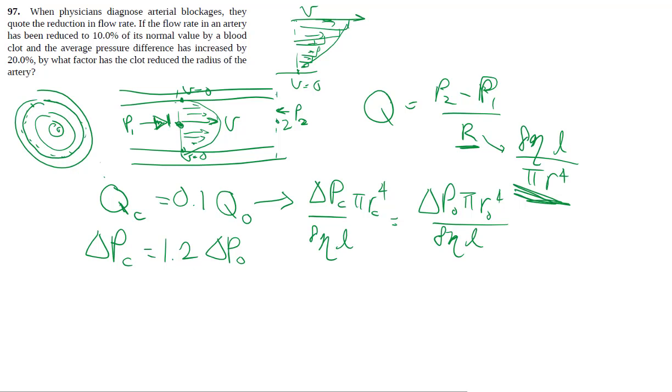And a bunch of these things do cancel out because both of them still are dealing with blood and you're talking about the same length in the tube. Pi goes away. And additionally, you can sub this into here, so we can cancel that out as well.